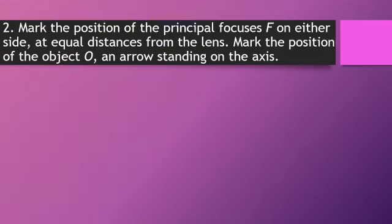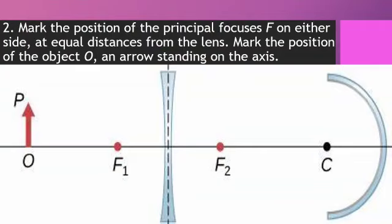Second, mark the position of the principal focuses on either side at equal distances from the lens. Mark the position of the object O, an arrow standing on the axis.